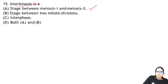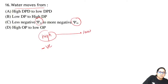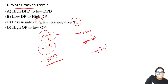Question 16: water moves from where to where? Water moves from less negative water potential to more negative water potential — meaning from high to low. For example, minus 200 is less negative, meaning high; minus 400 is more negative, meaning low. So water flows from the less negative to the more negative. Answer is C.